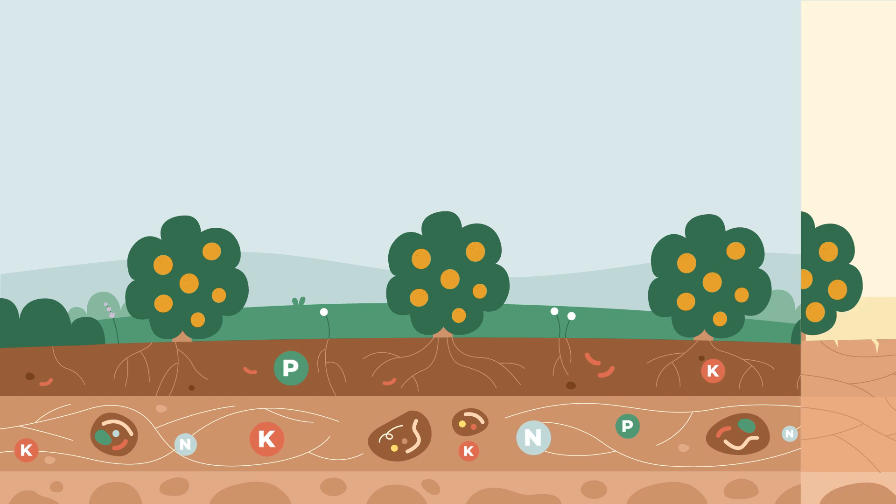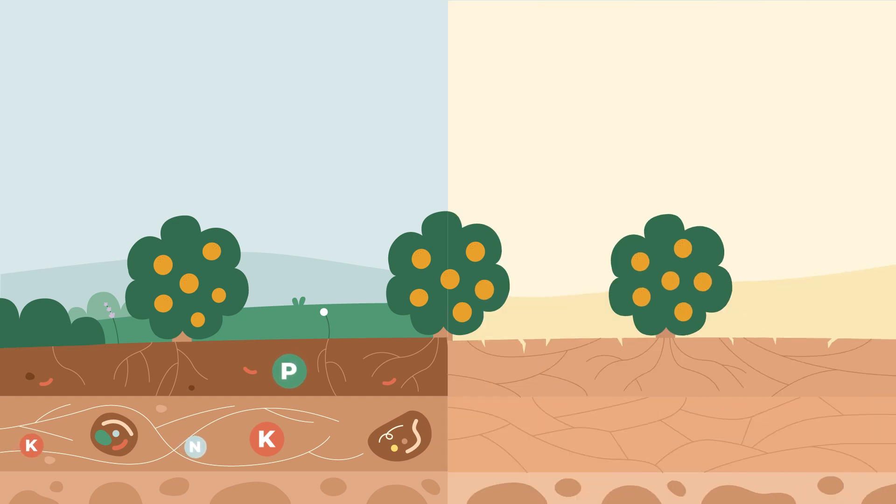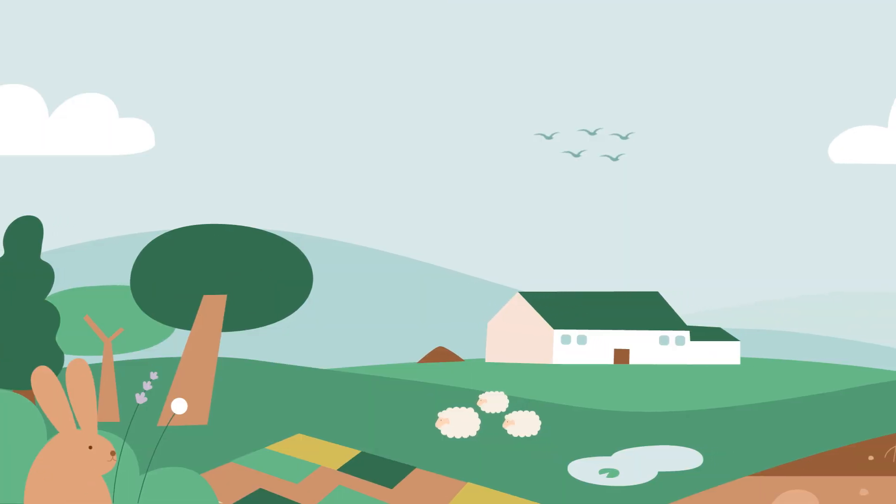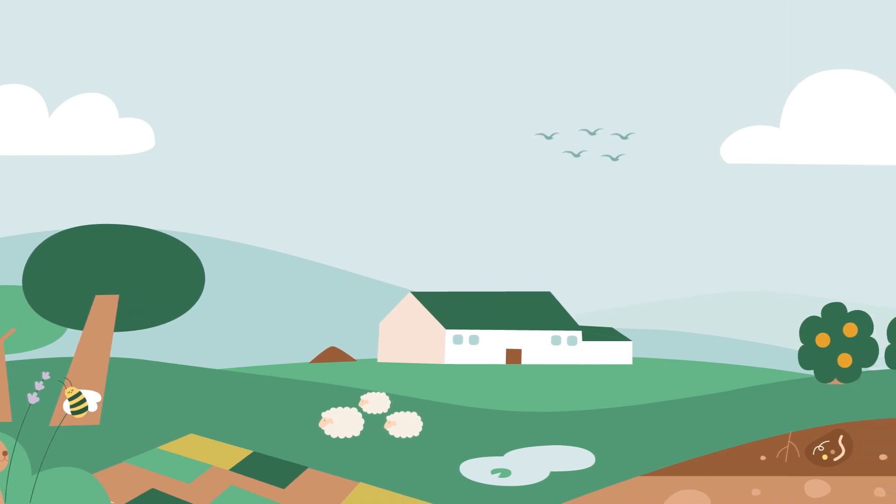A conventionally farmed soil, however, is drained, forced to start from scratch each season. Changing the way we farm can transform entire ecosystems.